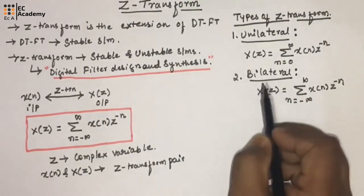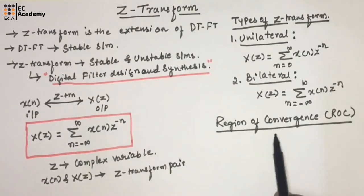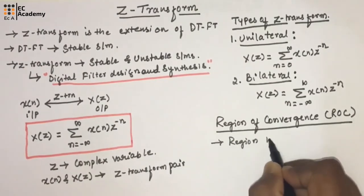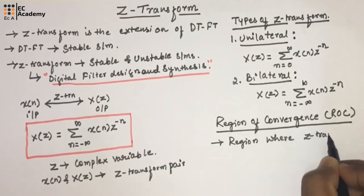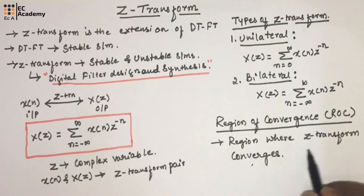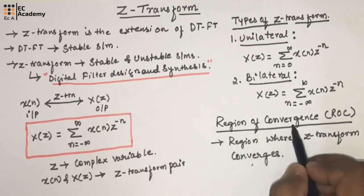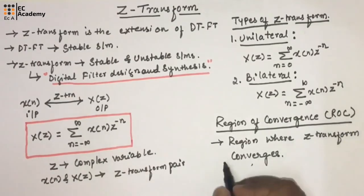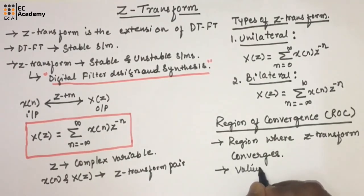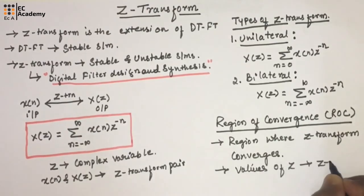Another important topic is the region of convergence. The region of convergence is the region where the Z-transform converges, commonly known as ROC. The ROC gives an idea about the values of Z for which the Z-transform can be calculated.